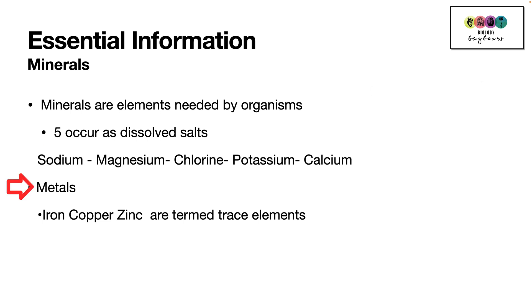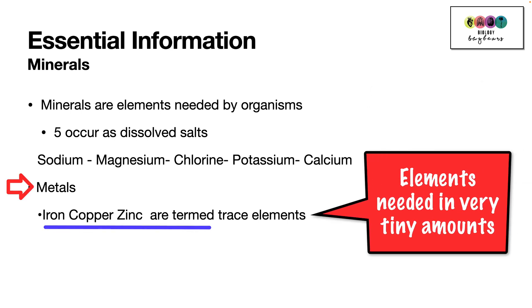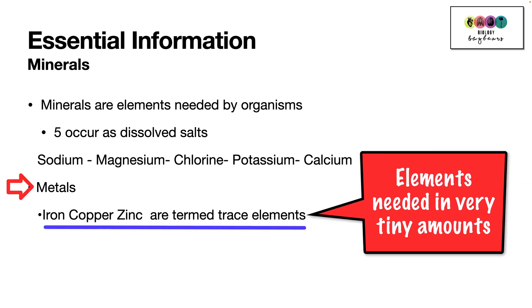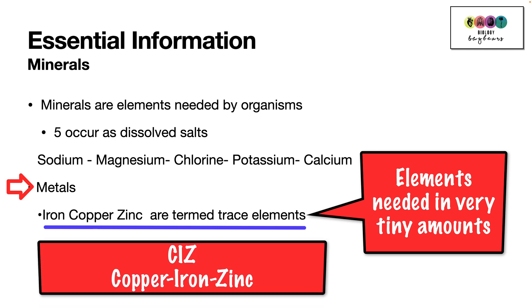Three elements which are metals — iron, copper, and zinc — are termed trace elements. They are found in very tiny amounts but are essential for life. We use the acronym CIS to remember them, written as copper, iron, and zinc.